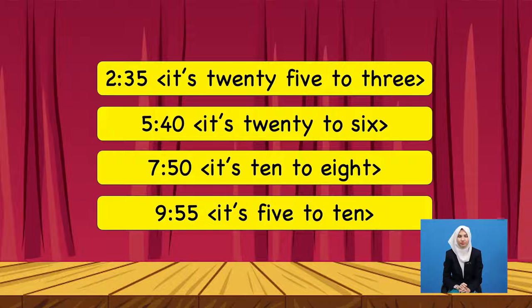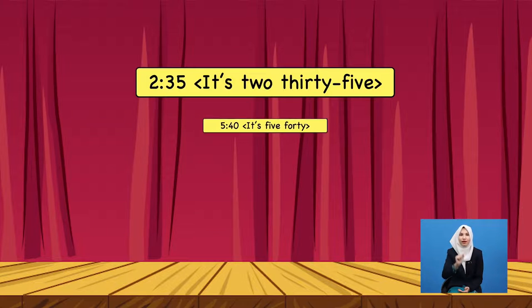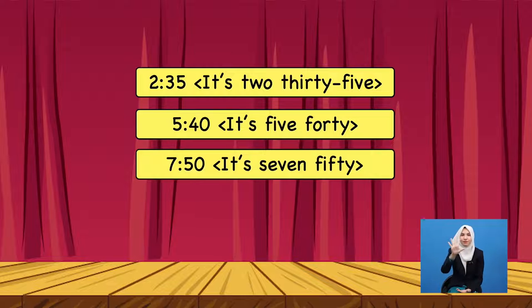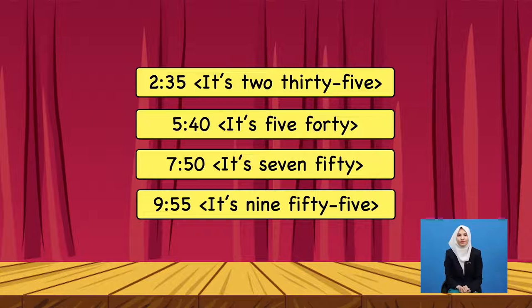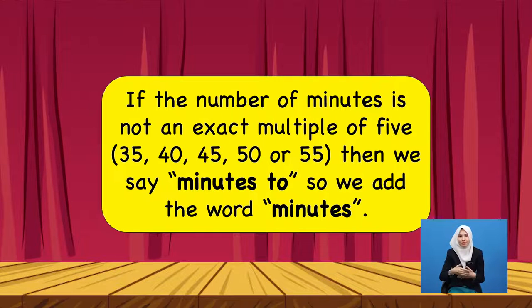We also have the second method. We can say it's 2:35, it's 5:40, it's 7:50, it's 9:55. Again, we have the same rule: if the number of minutes is not an exact multiple of five, then we add the word 'minutes' before 'to'.